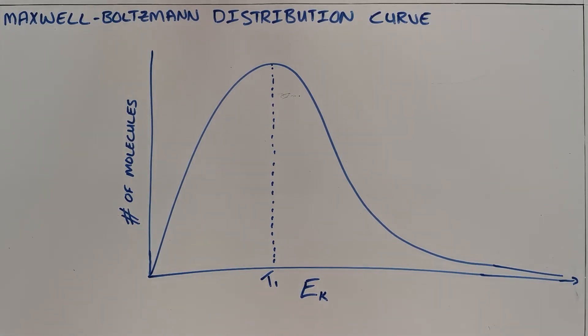Temperature is a measure of the average kinetic energy of the particles in a system. That is shown on the Maxwell-Boltzmann distribution curve, because when we say that a system has a certain temperature,